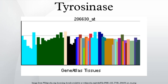A mutation in the tyrosinase gene resulting in impaired tyrosinase production leads to type I oculocutaneous albinism, a hereditary disorder that affects one in every 17,000 people.